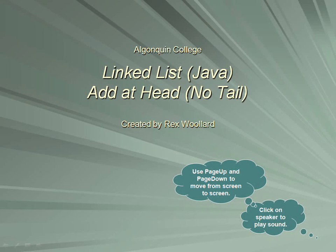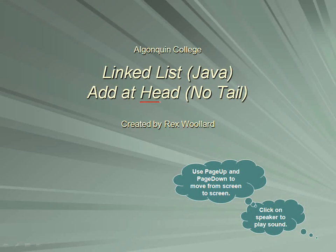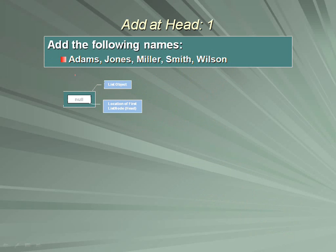In this lecture about linked lists, we'll explore one of the simplest kinds of linked lists, which has a head only. Later on, we'll take a look at the case where you have linked lists with both head and tail. In this linked list, our intent is to store a number of string objects.